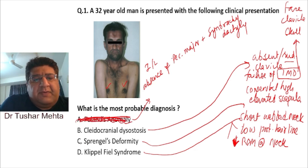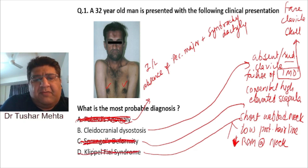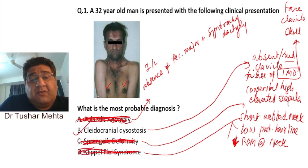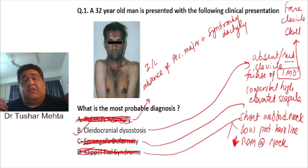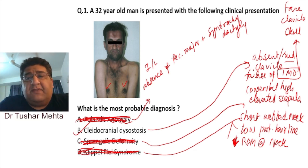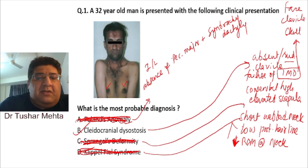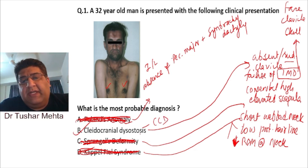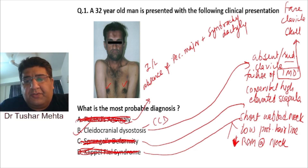Sprengel's deformity again — they have not shown me the scapula. With Klippel-Feil, both shoulders can be approximated together because of the absence of the clavicle. So the answer is CCD — cleidocranial dysostosis.